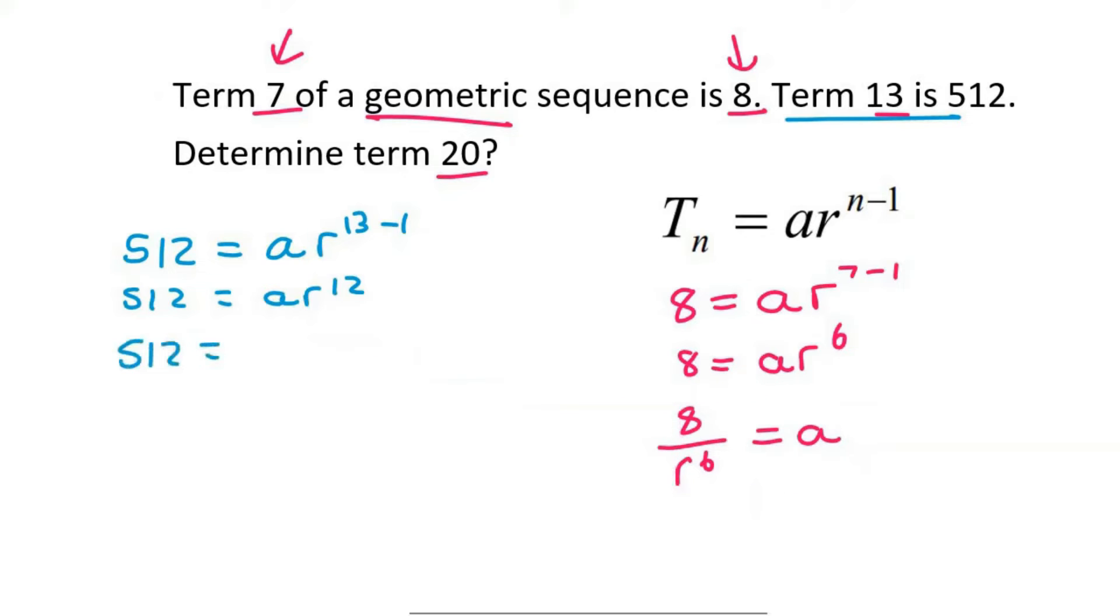So that's going to say 512 equals a, which is now 8 over r^6. You can put it in a bracket if you want, multiplied by r^12. Now, students always ask me, 'Kevin, what do we do now?' Well, what I tell them to do is just pretend that this has a 1 over it.